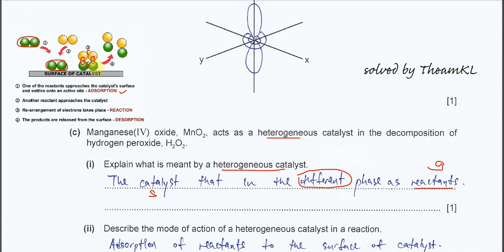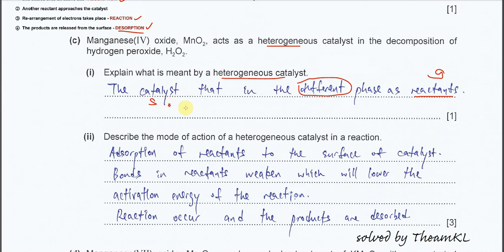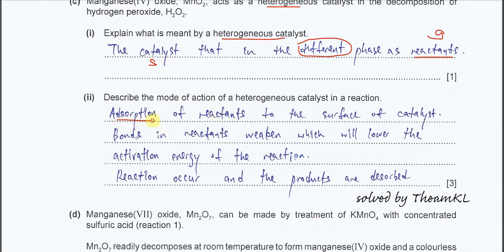After that it will form new products, and these molecules or products will desorb from the surface. So it involves three major processes: adsorption of the reactants to the surface of the catalyst, then the bonds in the reactants will get weakened which will lower the activation energy of the reaction. After that, the reactions will occur, bond formation happens and forms products. After that, products will undergo desorption.